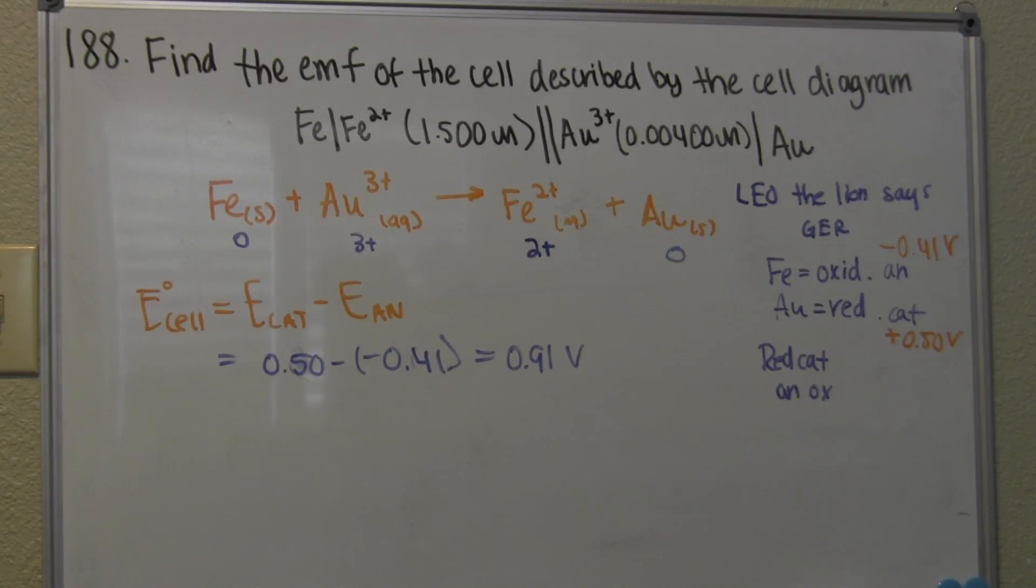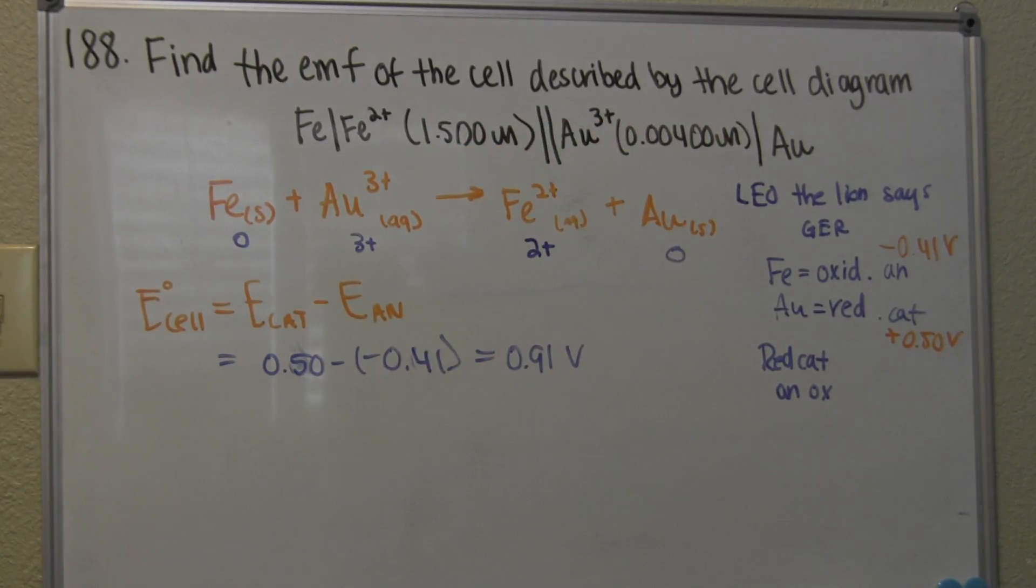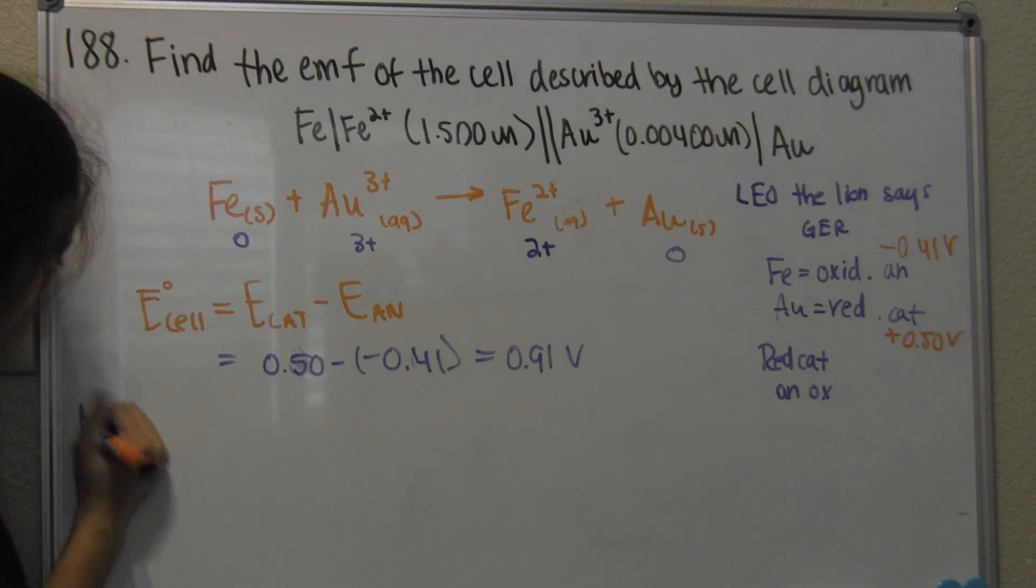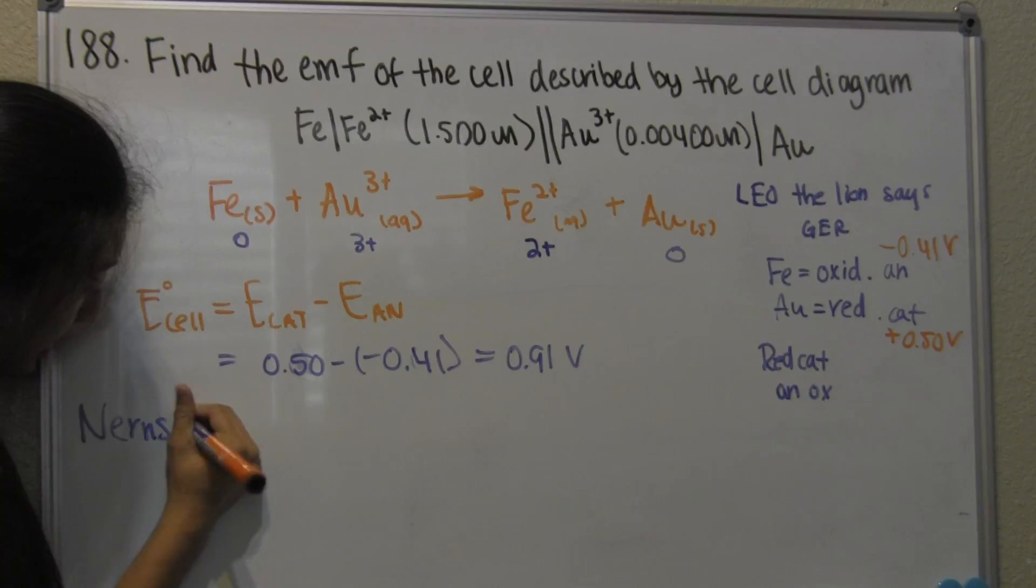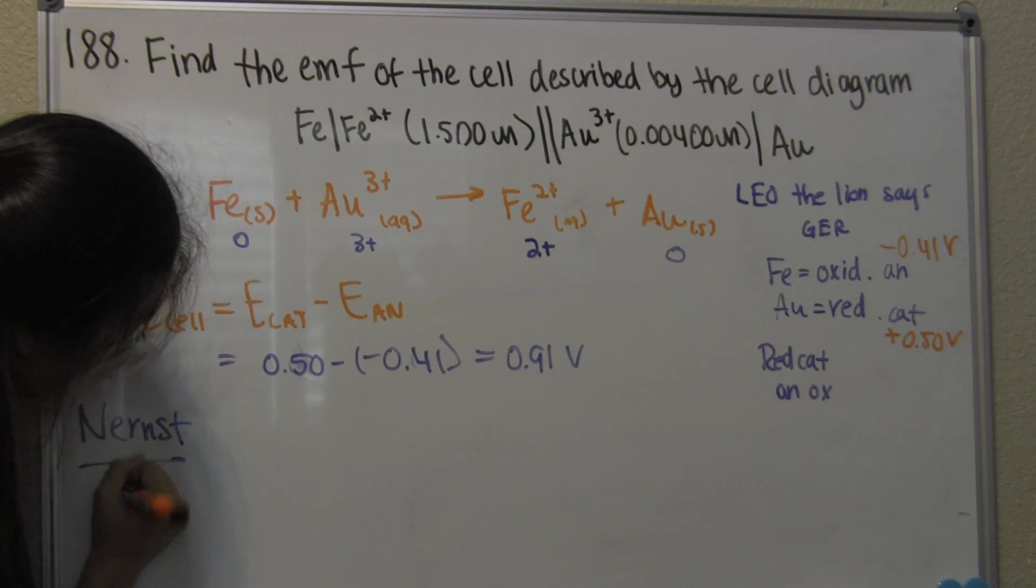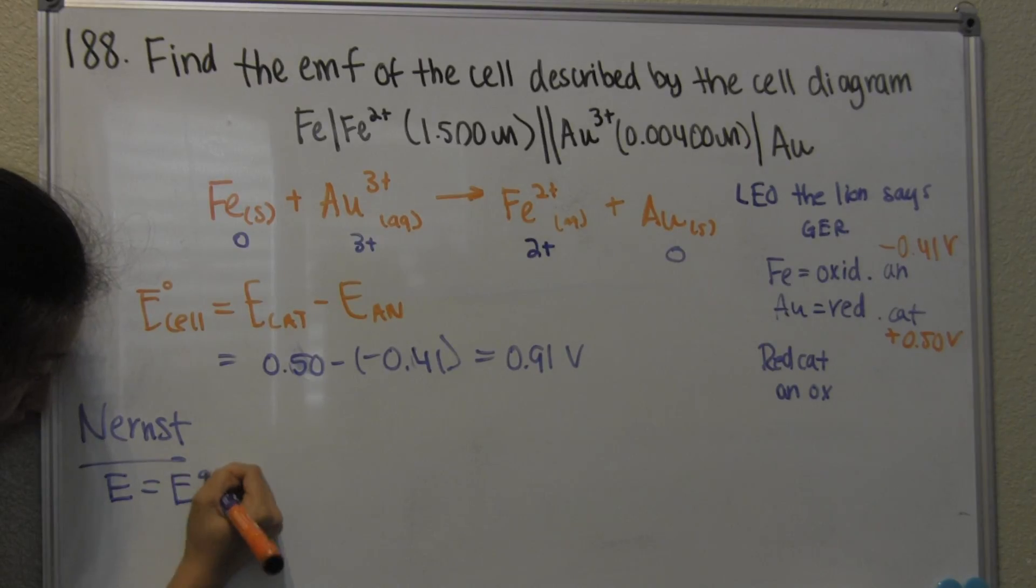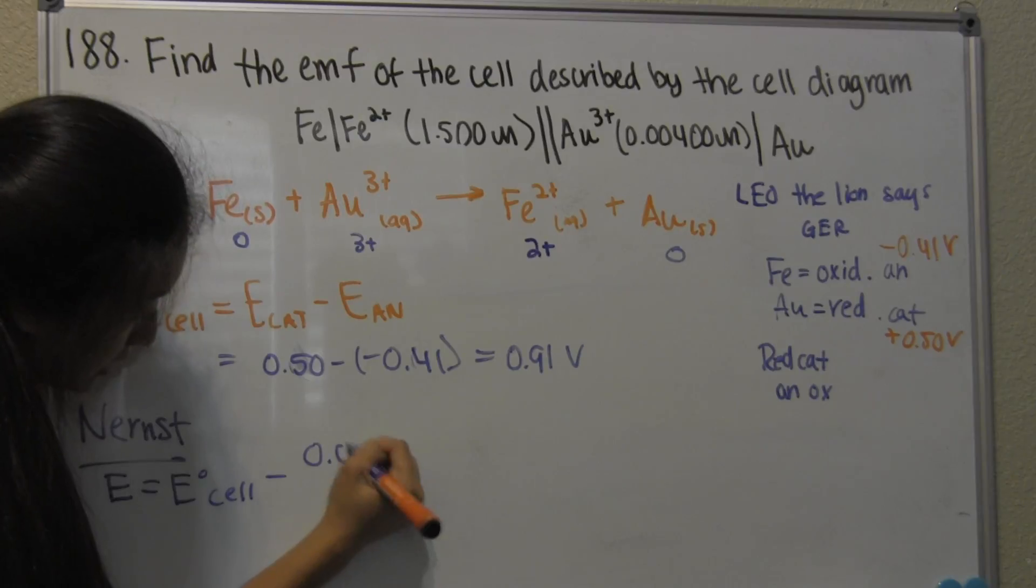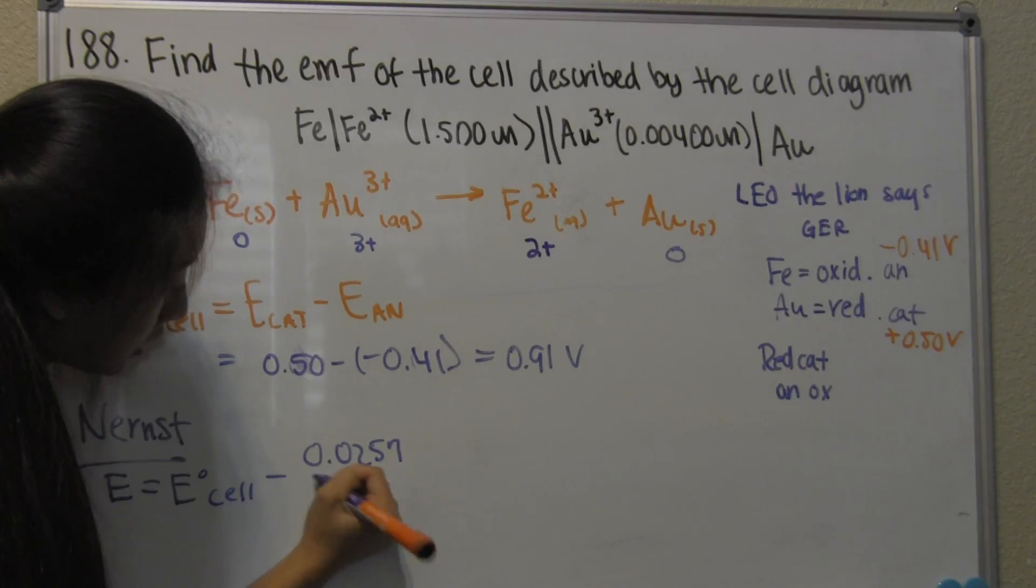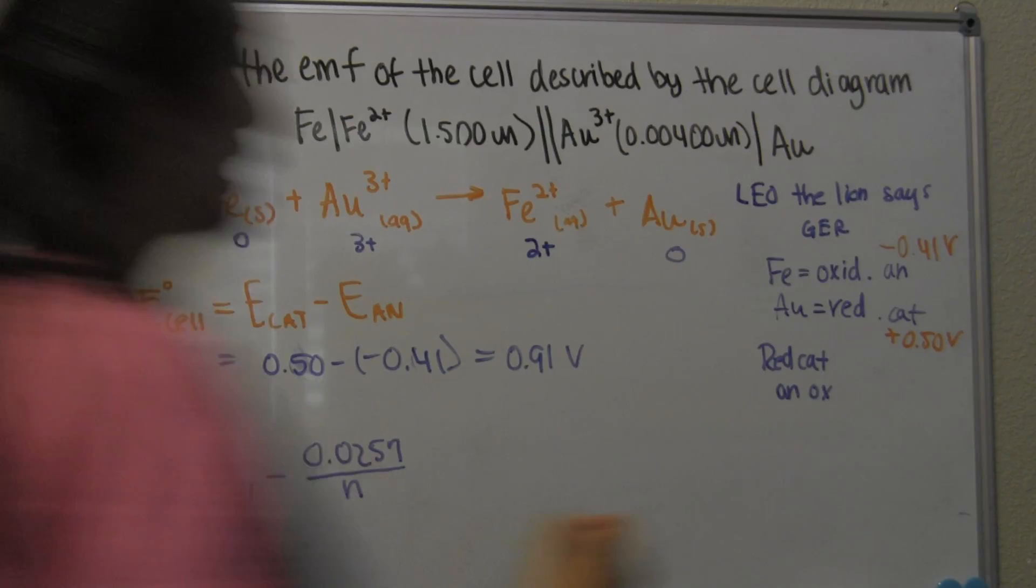Now we're not finished yet. Since we have the molarity of these two, we can use the Nernst equation. E equals E of the cell minus 0.0257 over N, which is the number of electrons transferred in this case.